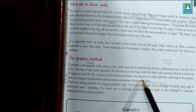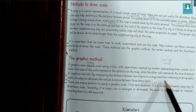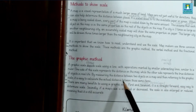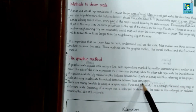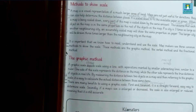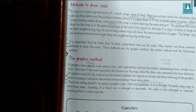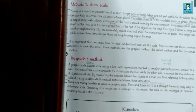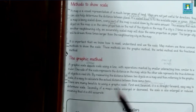By measuring the distance between two objects on a map and then referring to the graphic scale, it is easy to calculate the actual distance between those same items. For example, if there is a distance of 20 to 40 km between Peshawar and Lahore in real life, that will also be written as 20 to 40 km on the map.